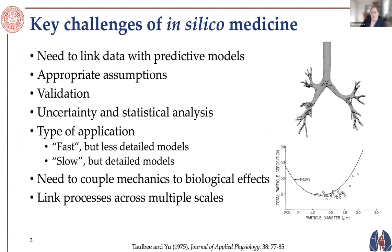There are many key challenges in in silico medicine — using modeling to predict medical outcomes. The first challenge is the need to link data with predictive models: models can only be predictive if they're validated and based on data collected, hopefully in vivo. Another challenge is making appropriate assumptions, since all models have assumptions and determining which are appropriate is really important.